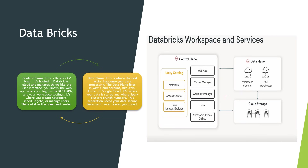Now looking at the slide covering control plane and data plane — let's take the example of an ETL pipeline. When you run jobs, you need to store data, so the data plane covers AWS, Azure, and GCP storage accounts. The control plane is where you create your notebooks, jobs, and workflow manager. Using the control plane, you run your jobs and store data into the data plane — that's the integration between the two.